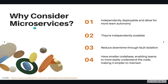Why should we consider using microservices? First, microservices are independently deployable and they allow for more team autonomy. Each microservice can be deployed independently as needed, enabling continuous improvement and faster application updates. Specific microservices can be assigned to specific dev teams, allowing them to focus solely on one service or feature and work autonomously without worrying about the rest of the application.